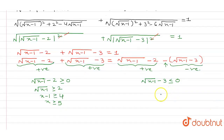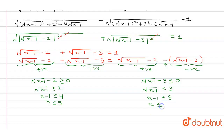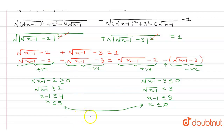In the second condition, √(x − 1) ≤ 3. Squaring both sides, x − 1 ≤ 9, so x ≤ 10. By combining both conditions, the value of x should be greater than or equal to 5 but less than or equal to 10. So the answer is x ∈ [5, 10].